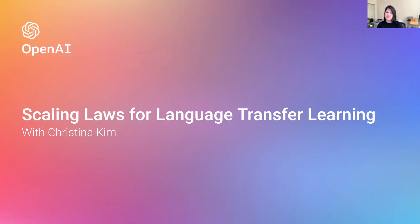Throughout the OpenAI Scholars Program, I was really interested in questions around data — what characteristics and attributes are there, and how does that impact model performance. For my project, I looked at how the scaling laws look for pre-trained English language models as we transfer to other languages.